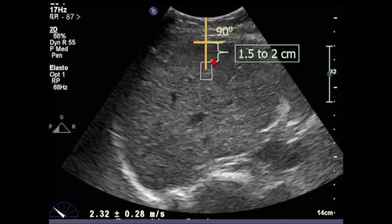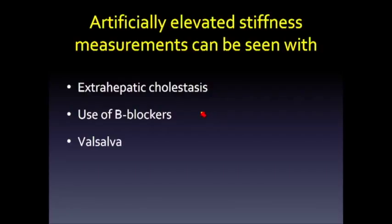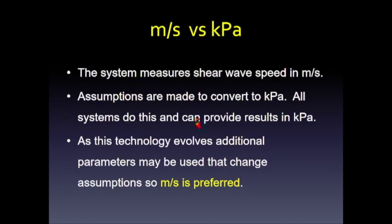We usually provide both kilopascals and meters per second in our reports, and most vendors, since the SRU consensus was published, now provide both numbers. Other factors that affect measurements include extrahepatic cholestasis, use of beta blockers, and Valsalva maneuver. Every ultrasound system measures in meters per second and makes assumptions to convert to kilopascals.